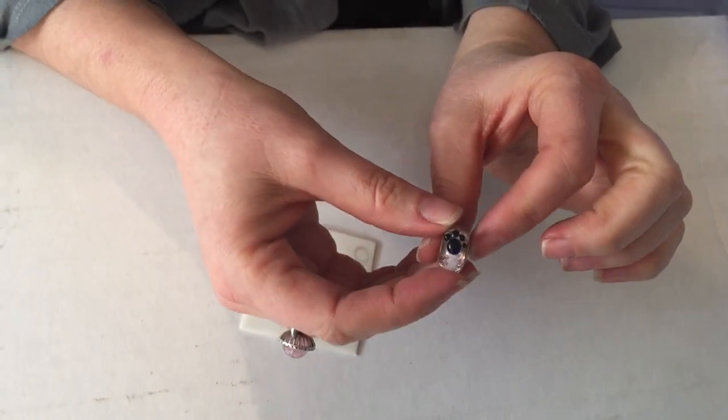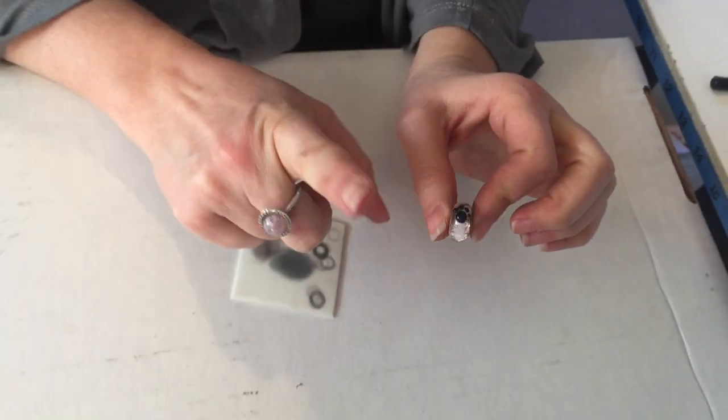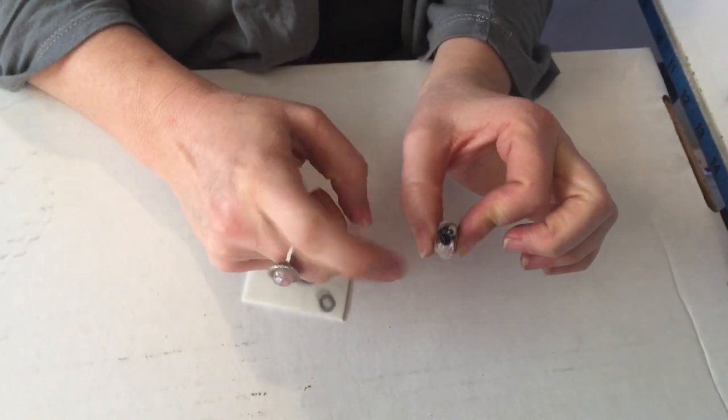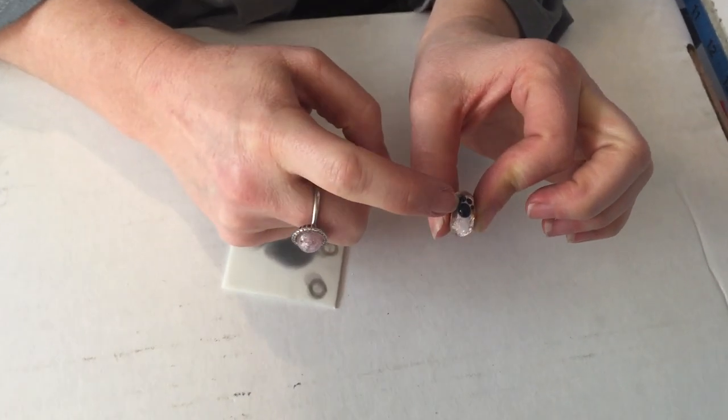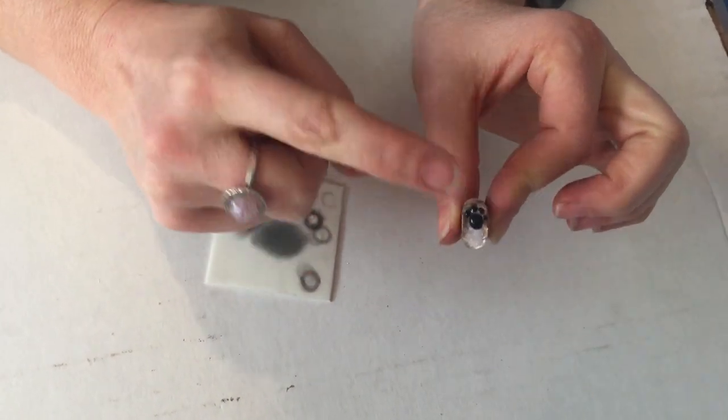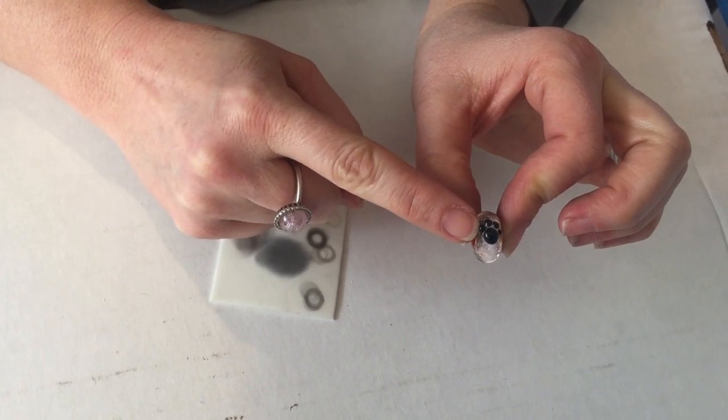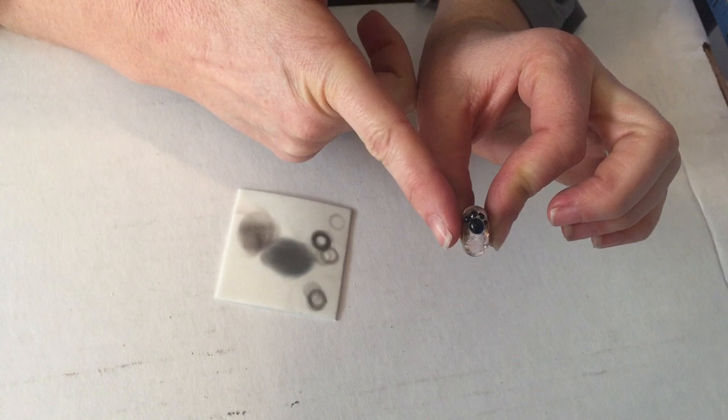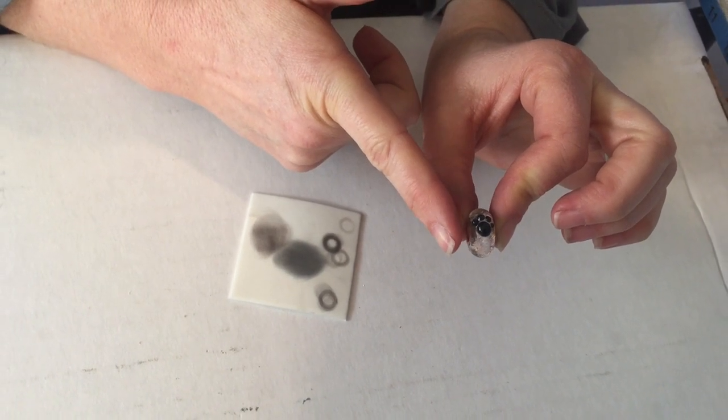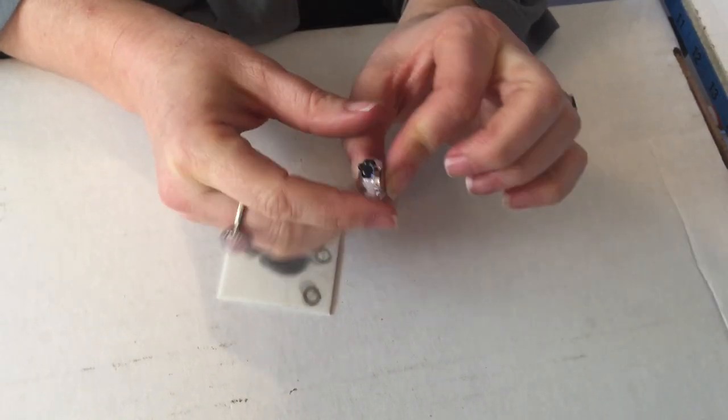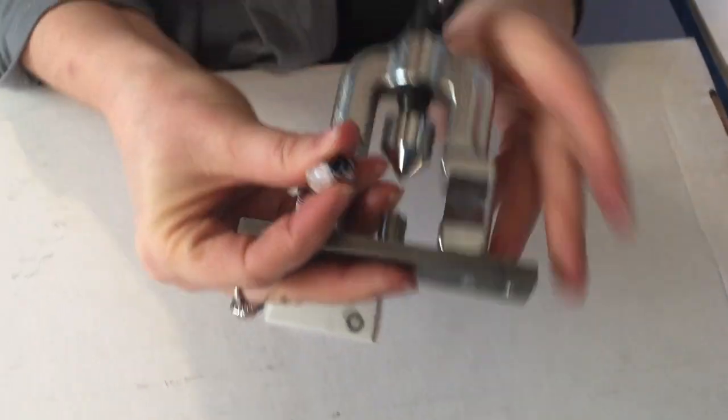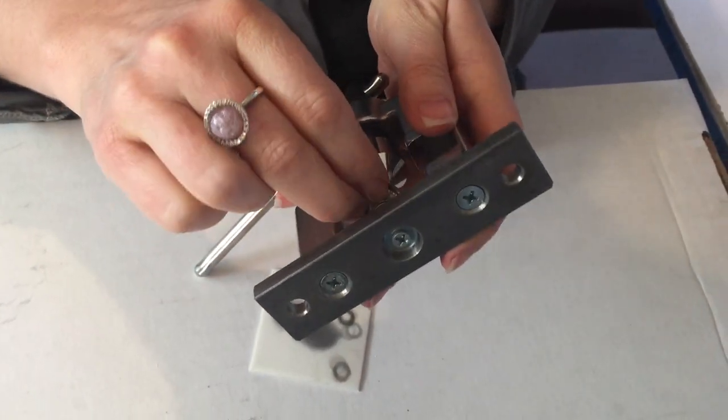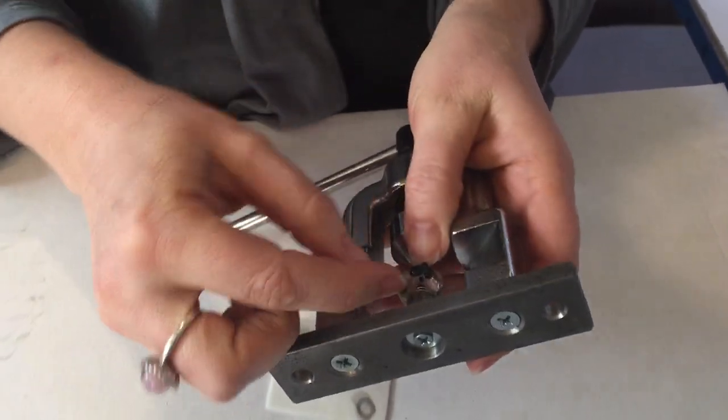So now this one has a paw print. If you're going to make beads and add any embellishments or designs to it, you have to be really mindful that the little fingers of the paw doesn't go over the edge of your glass bead. Or else, when you go in here, if that touches the bottom right here, it will crack the whole bead.